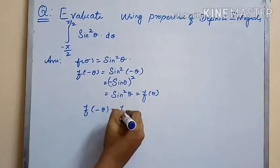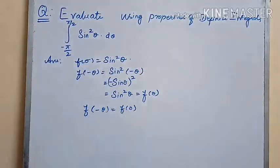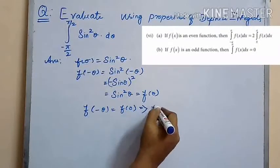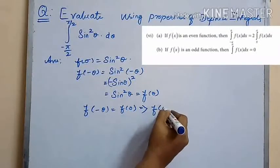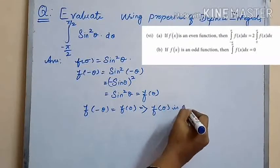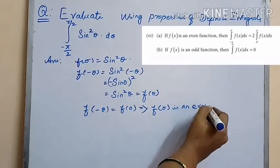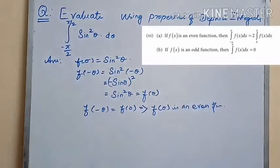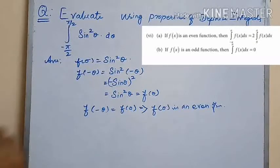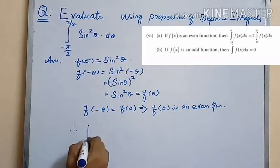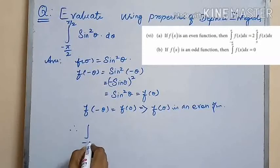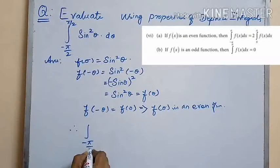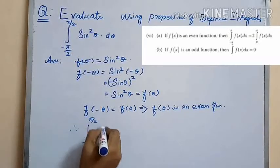Since f(−θ) is equal to f(θ), this implies that f(θ) is an even function. By the property, the integral from minus a to a of f(x) dx is equal to 2 times the integral from 0 to a of f(x) dx if f(x) is an even function.